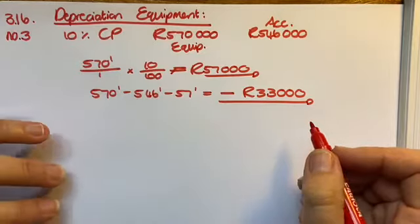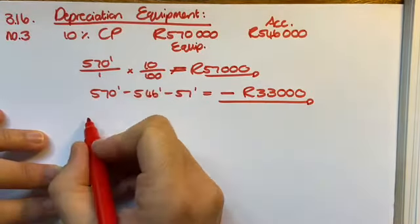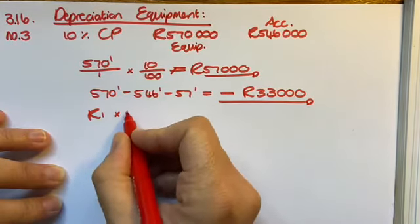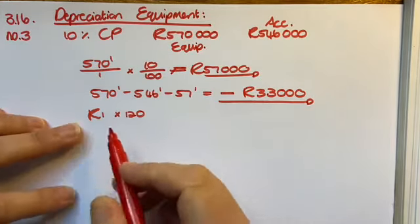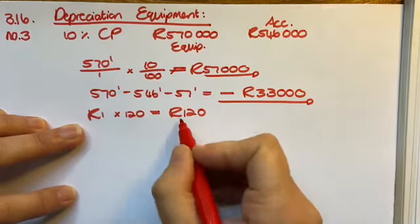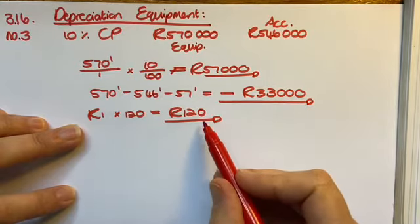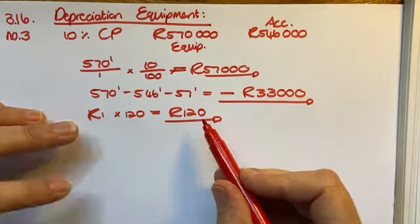But there's another trick on this one. There were 120 items, so each one of them has to be worth at least one rand. So at the end of the day when I finish with this, I should have the carrying value of my equipment at 120 rand, nothing less.